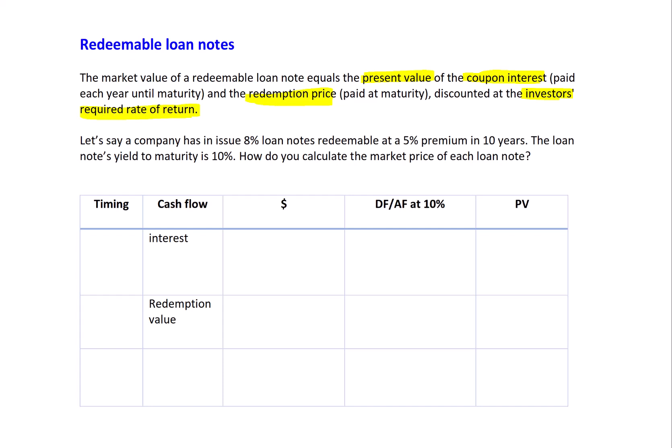We have an example here to put that technique into practice. The company has issued 8% loan notes - the 8% is the coupon rate. They're redeemable at a 5% premium, which means they're redeemable at 5% above their par value. The par value is 100, so therefore 5% on 100 means they'll be redeemable at $105.